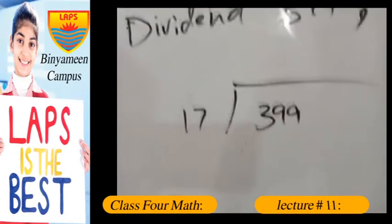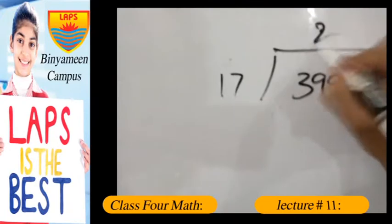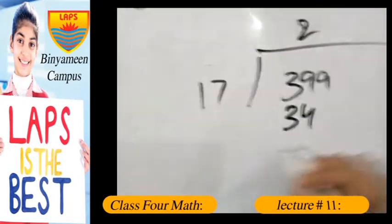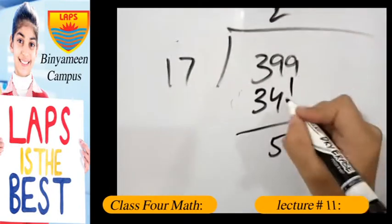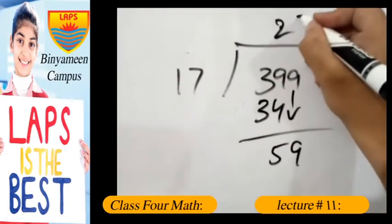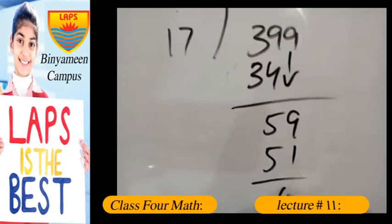So if we have to divide 399 by 17, I think 17 twos are 34. So if we assume or take 34, we'll get 5 here along with 9. 17 threes make 51. So if we minus 51, we get 8.